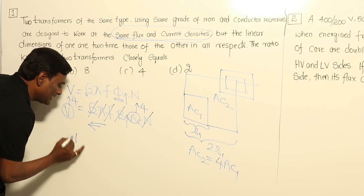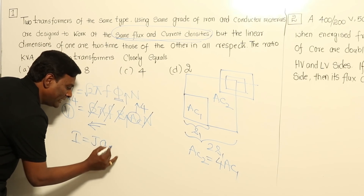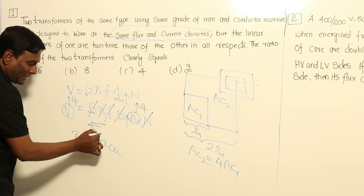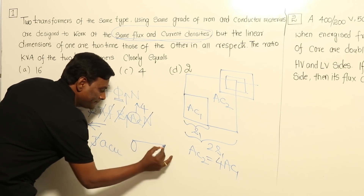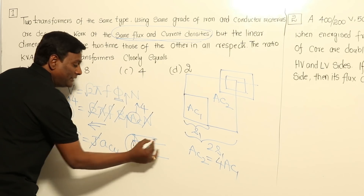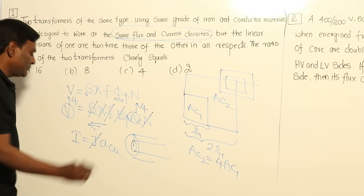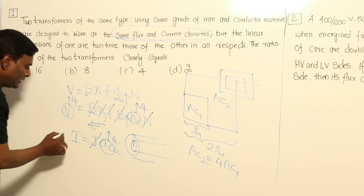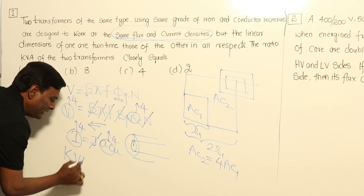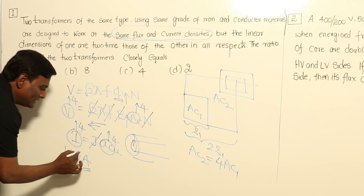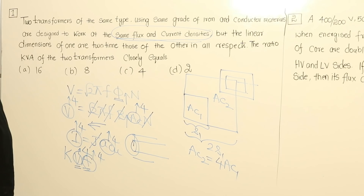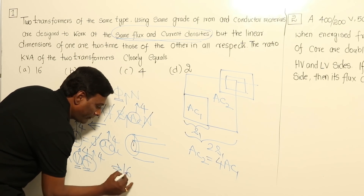Current equals current density multiplied by area of cross section of copper. Since same current densities are maintained, current density is constant. If each linear dimension of the copper wire is doubled, the radius is doubled, so the area of cross section of copper increases by 4 times. Therefore, current increases by 4 times in the second case. KVA equals voltage multiplied by current, and since both voltage and current are increased by 4 times, KVA should be increased by 16 times.